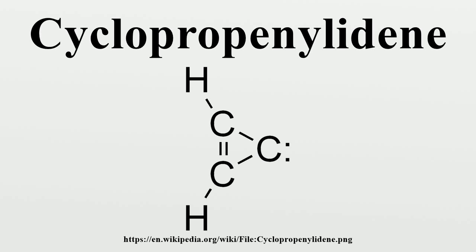The major formation reaction of c-C₃H₂ is the dissociative recombination of C₃H₃⁺: C₃H₃⁺ + e⁻ → C₃H₂ + H. C₃H₃⁺ is a product of a long chain of carbon chemistry that occurs in the ISM, and carbon insertion reactions are crucial in this chain for forming C₃H₃⁺. The protonation of NH₃ by C₃H₃⁺ is the second most important formation reaction.